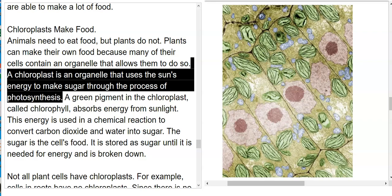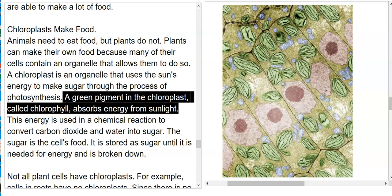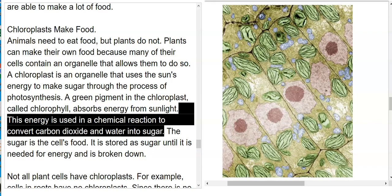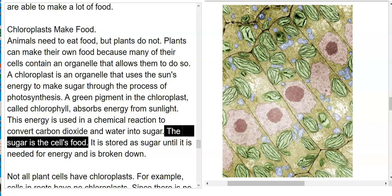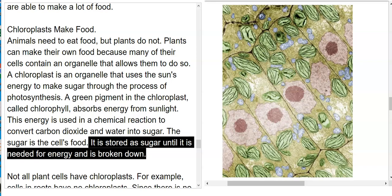A chloroplast is an organelle that uses the sun's energy to make sugar through the process of photosynthesis. A green pigment in the chloroplast called chlorophyll absorbs energy from sunlight. This energy is used in a chemical reaction to convert carbon dioxide and water into sugar. The sugar is the cell's food. It is stored as sugar until it is needed for energy and is broken down.